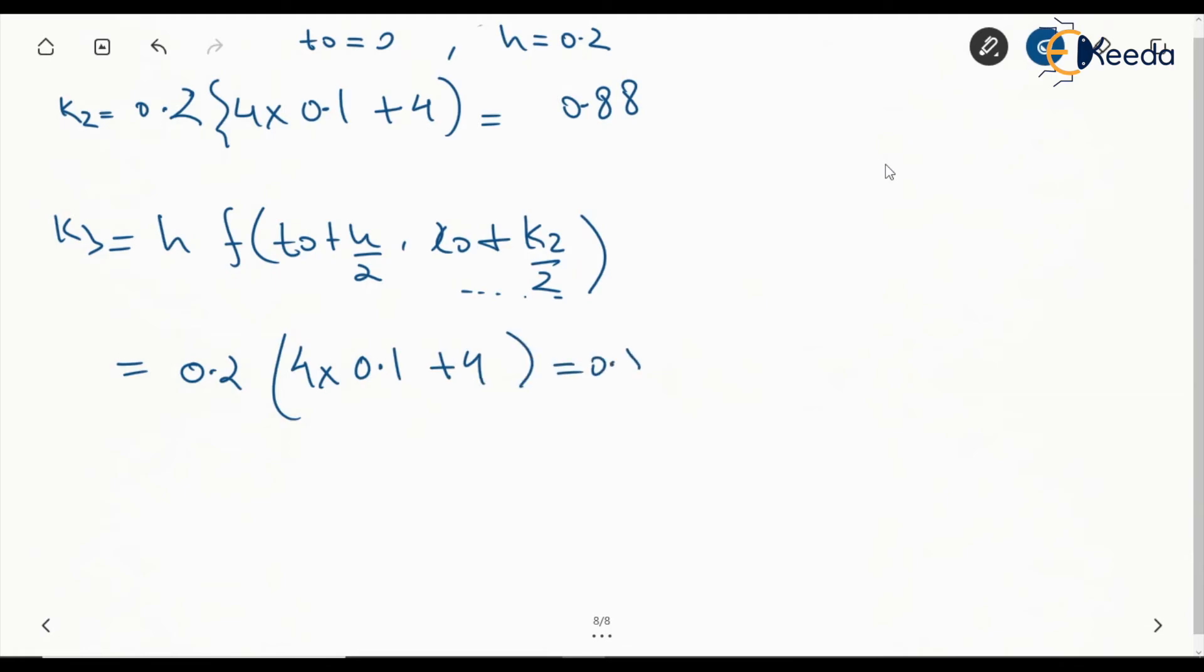Now K₄. K₄ is going to be h into f(t₀ + h, x₀ + K₃). Independent of this term, h is equal to 0.2. This is 0.2 into 4 into (0.2 plus 4), so this is 4.8 into 0.2, which is 0.96.